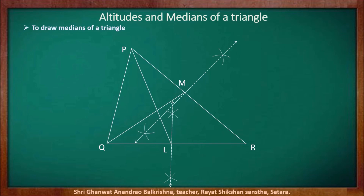Now for the remaining side, segment PQ, we will find the midpoint of segment PQ. For that, draw a perpendicular bisector. N is the point of intersection — N is the midpoint of segment PQ. Now join vertex R and midpoint N — segment RN is the third median. So we have drawn here all three medians of the triangle.